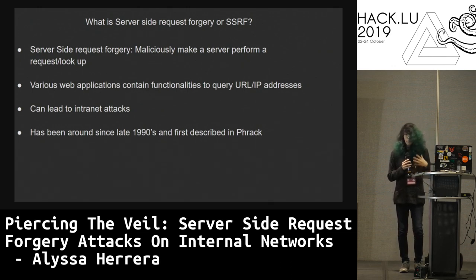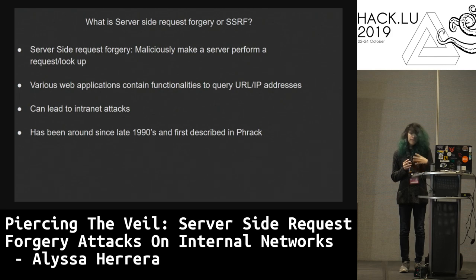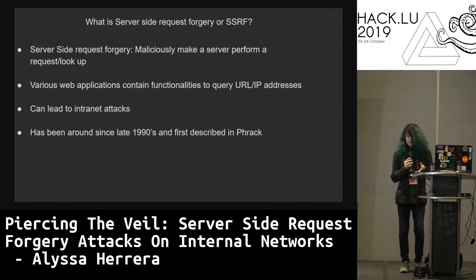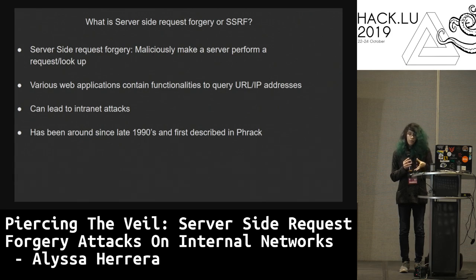A server-side request forgery vulnerability is essentially the ability to maliciously route a request either into the internal landscape or externally through a target that's not supposed to be accessed. SSRF primarily occurs where an application allows you to make a URL or IP request — for example, a user wanting to remotely import their RSS feed, or web forums that allow you to import a remote image as your profile. SSRF often appears benign at first, as developers initially write off the ability to make a request as something that couldn't be maliciously used.